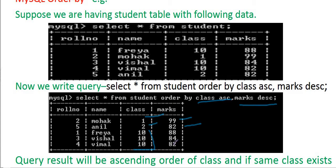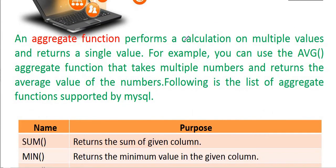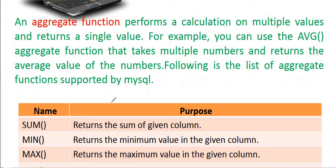Aggregate functions perform calculations on multiple values and return a single value. For calculations, you use SQL aggregate functions. For example, the AVG aggregate function takes multiple numbers and returns their average value.